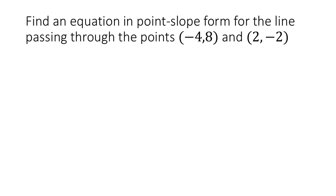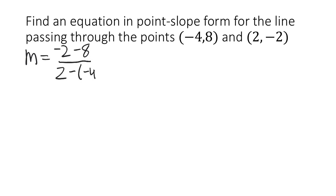In this example, we're asked to find the equation of a line in point-slope form that goes through these two points: negative 4 comma 8, and 2 comma negative 2. To use the point-slope form, we need a point and we need a slope. We have two points to choose from, but we don't have a slope. The good news is we can use the slope formula to figure it out. Our slope m is going to be y2 minus y1 over x2 minus x1, which is negative 2 minus 8 over 2 minus negative 4.